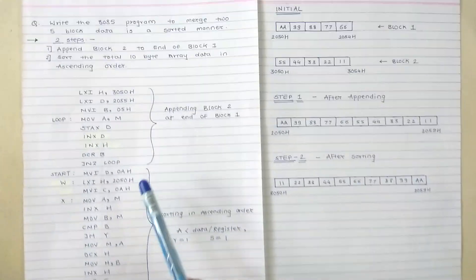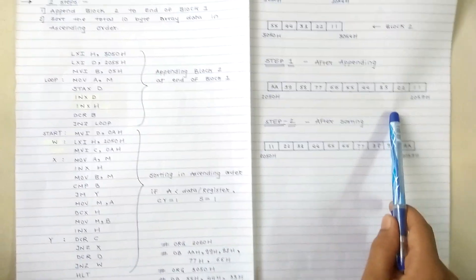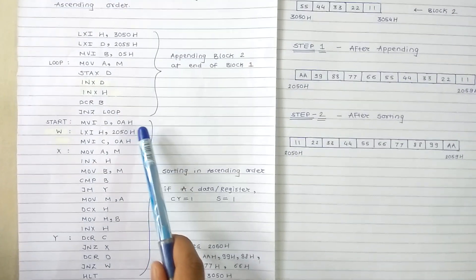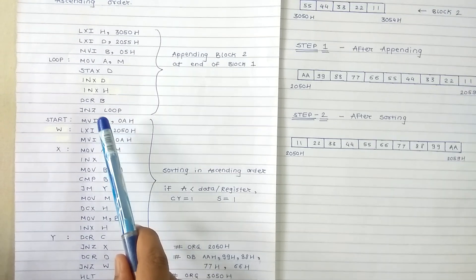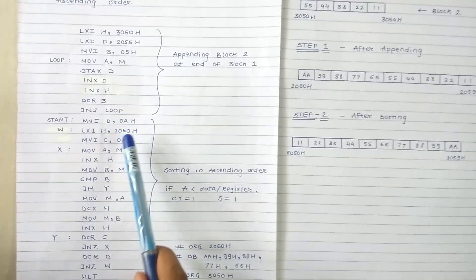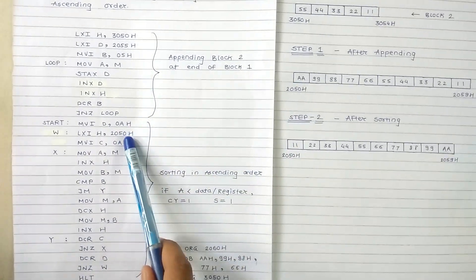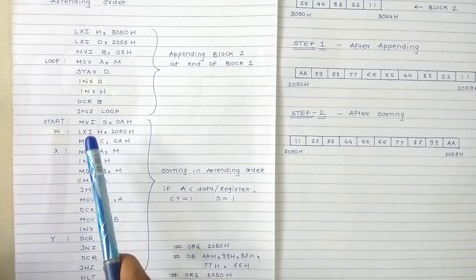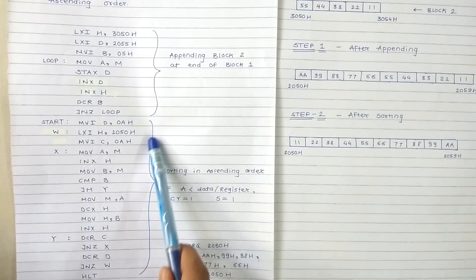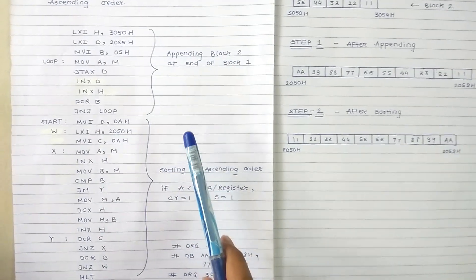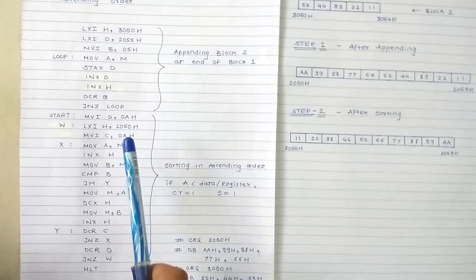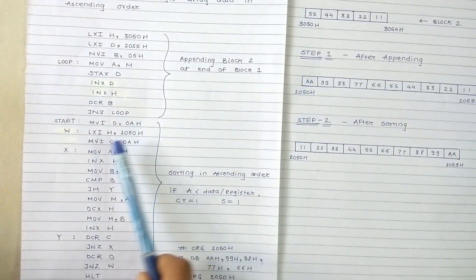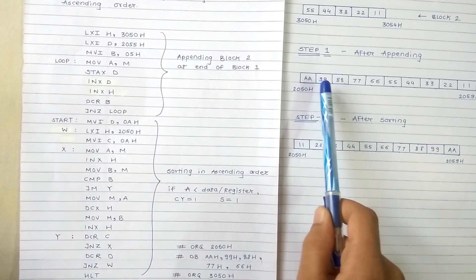After completing step 1, the array is merged. Now we have to sort it. For the sorting program, we load count 10 into register D, load the source/destination into the HL pair, and load the inner count into register C. We use two counts because this is the logic of bubble sort.